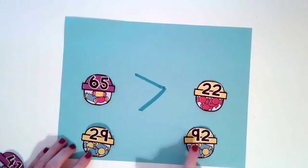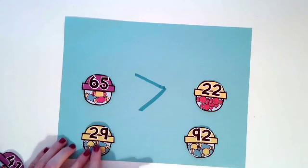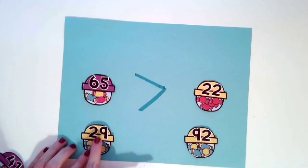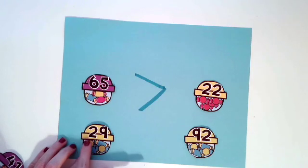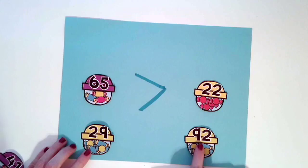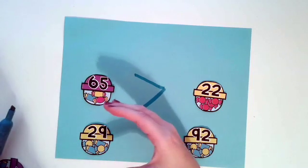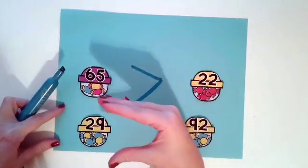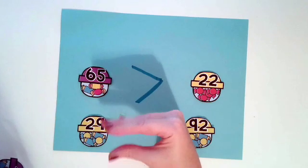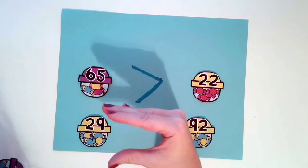29 and 92. How many tens does 29 have? Two. How many tens does 92 have? Nine. So is the claw going to want to grab 29? No. He always grabs the greatest number, right?